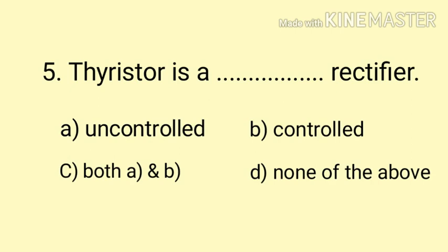Question number five: Thyristor is a __ rectifier. Option A: uncontrolled, Option B: controlled, Option C: both A and B, and Option D: none of the above. Here thyristor is a controlled rectifier, so the correct answer is option B.